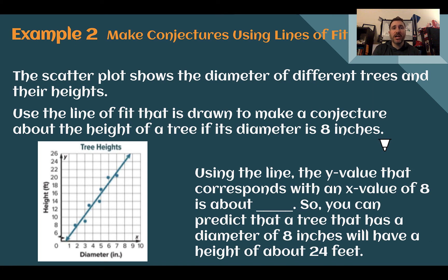Example two, make conjectures using lines of fit. This scatter plot shows the diameter of different trees and their heights. Use the line of fit that is drawn to make a conjecture about the height of a tree if its diameter is 8 inches. So using the line, the y value that goes with an x value of 8, here's 8 for our diameter, let's go up.